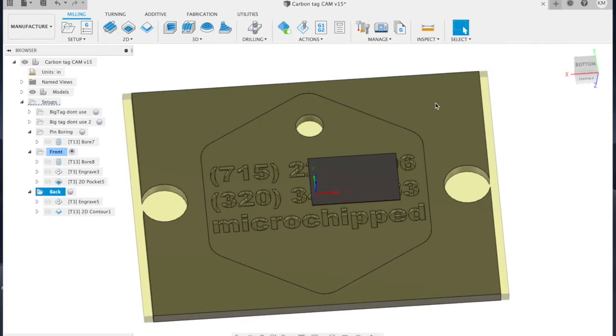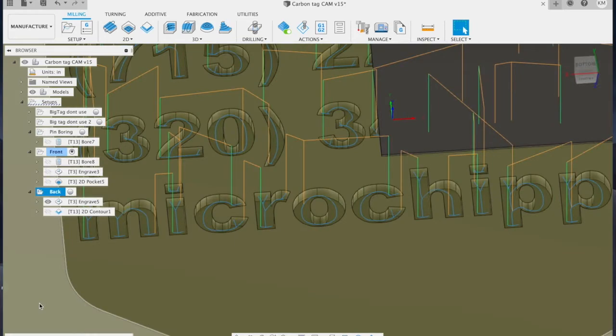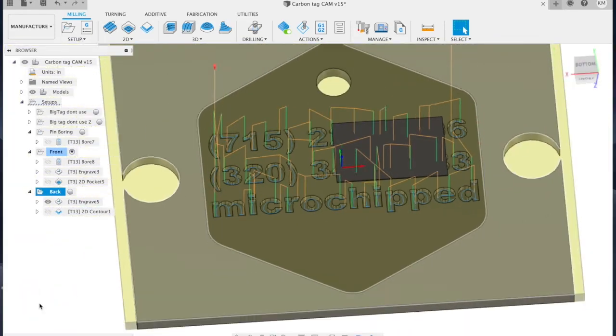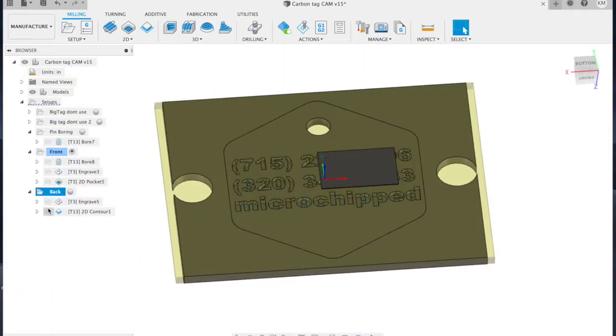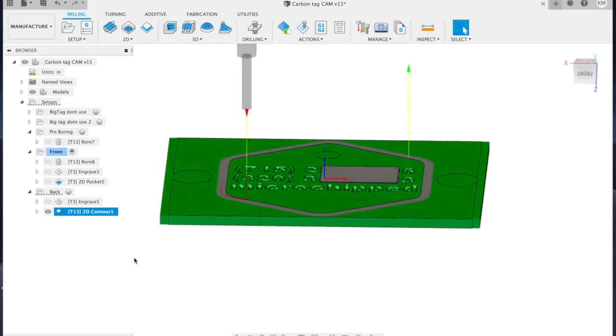There are only two operations on the back side. The first is again an engraving toolpath to cut the lettering. Because this text is so small, there's no need for a pocketing cleanup. The second operation is a 2D contour that cuts the final piece out of the stock. If we did everything right, you can see the tool cut right through the front side in the correct alignment.